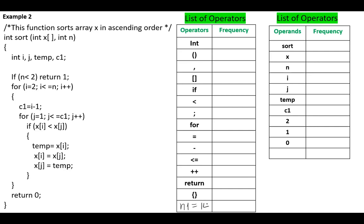The frequency of the operator integer is 4, parentheses, 5, comma, 4, square bracket 7, for 2, less than sign 2, semicolon 11, if 2, equal sign 6 times, minus sign 1, less than or equal to 2 times. The operator plus plus 2 times, return 2 times, curly brackets 3 times, their total, capital N1, equals 53.